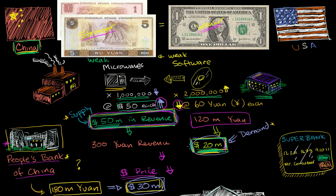If we had a floating exchange rate, the supply of dollars is much greater than the demand for dollars, so the dollar would become weaker. It would become weaker, and the yuan would become stronger, and that would resolve the trade imbalance.